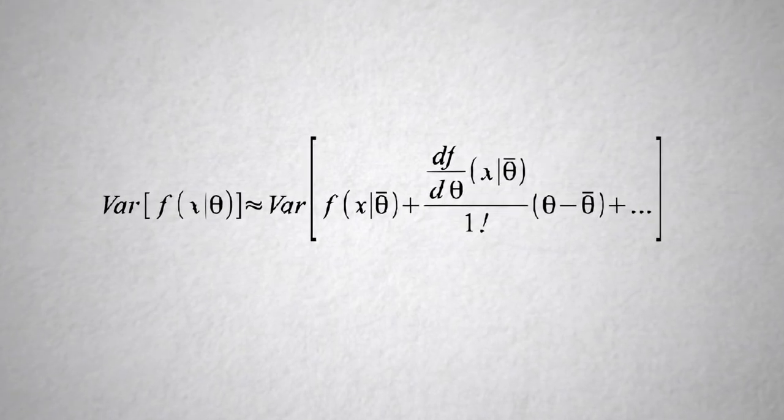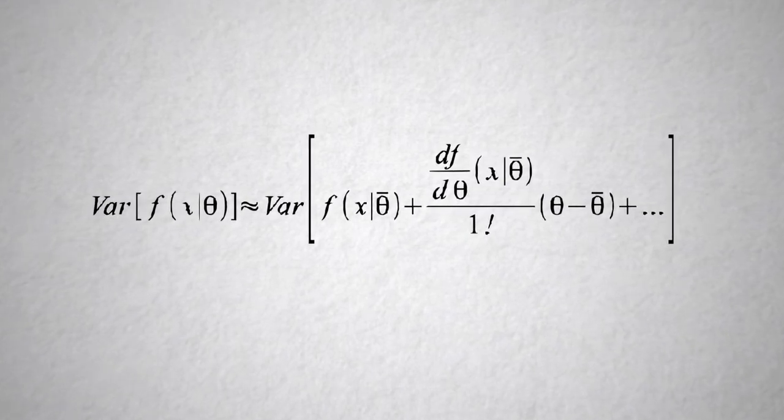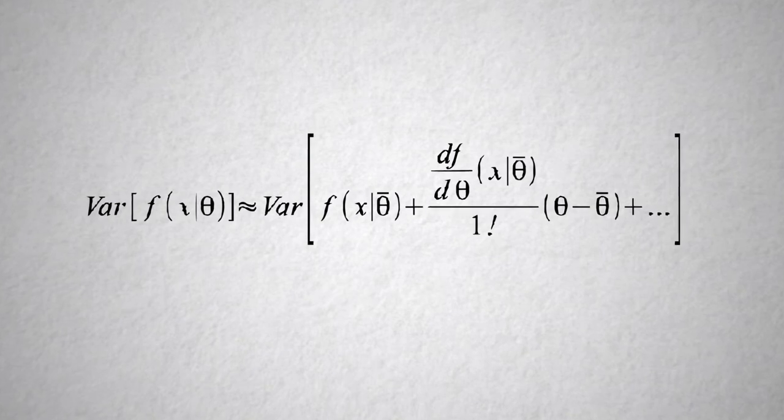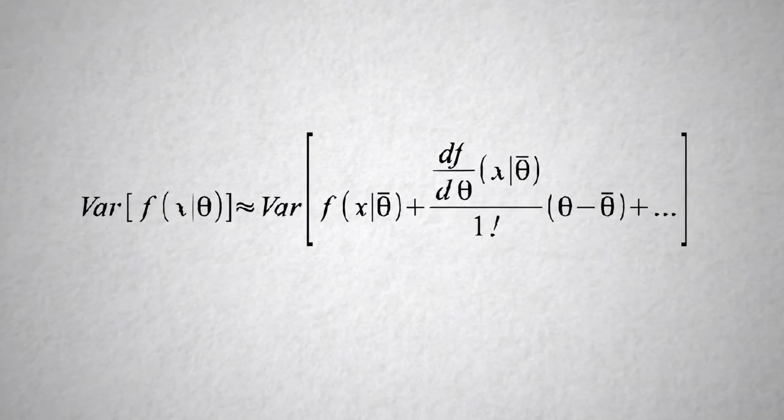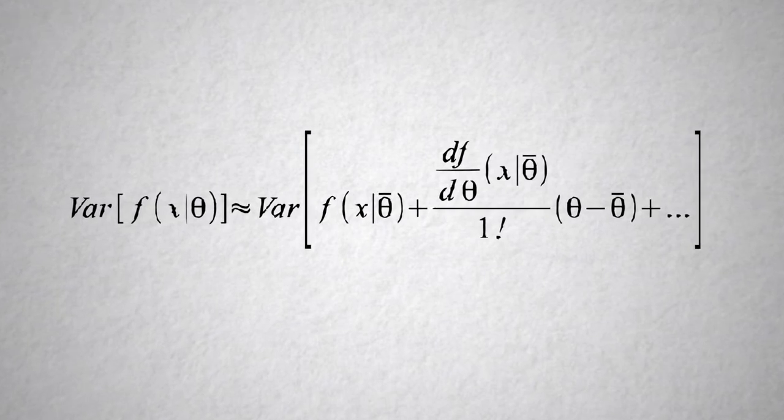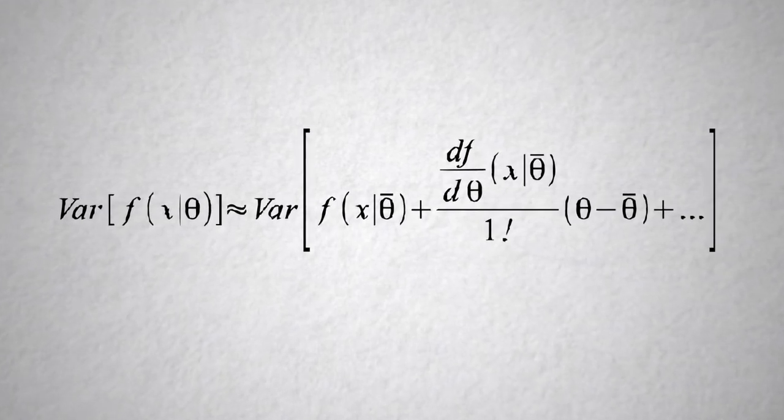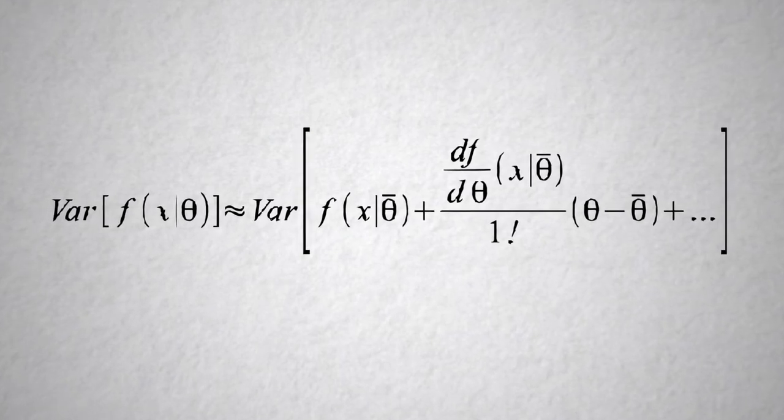When we do this, we find that the resulting solution is very similar to what we had for our linear model. The key difference is in our linear model, we had specific slopes, and then we do a non-linear model, we have instead the derivatives, and those derivatives may change depending on where you are in parameter space, but there's something we can solve for analytically.